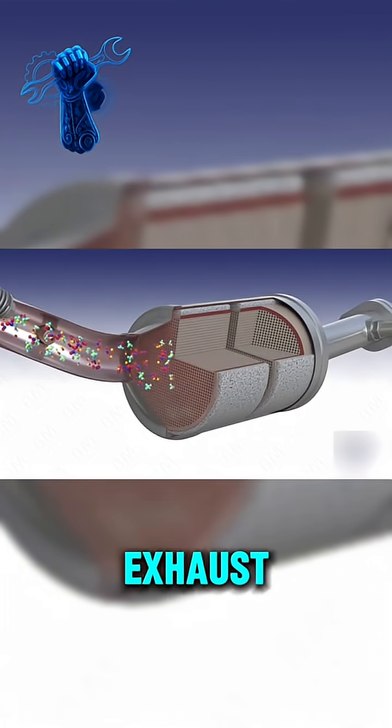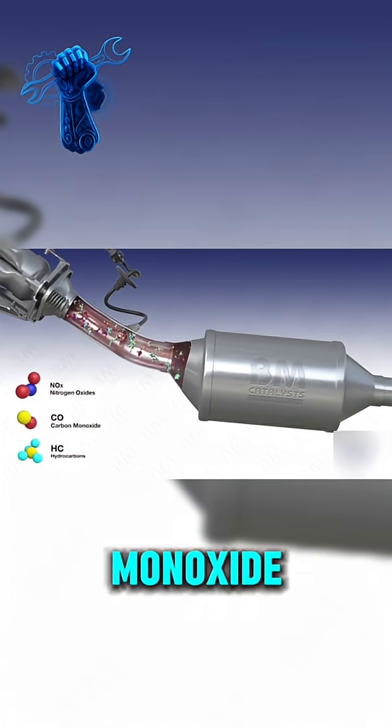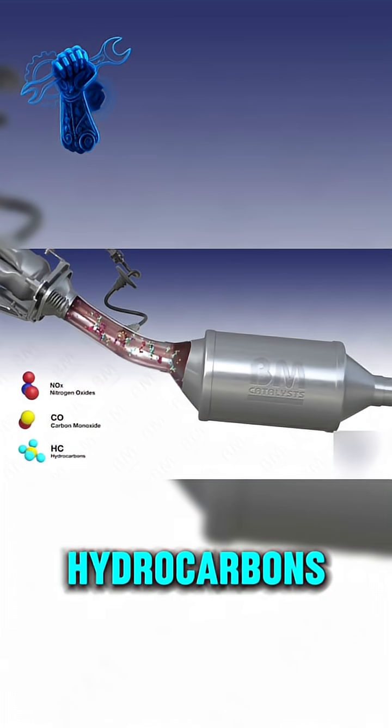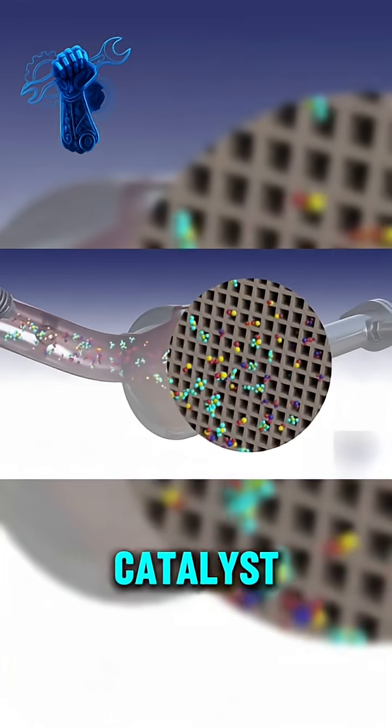Here's how it works. As hot exhaust enters the converter, carbon monoxide, unburned hydrocarbons, and nitrogen oxides pass across the catalyst's surfaces.